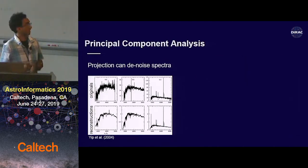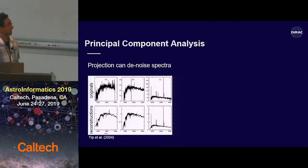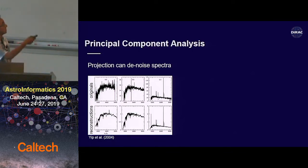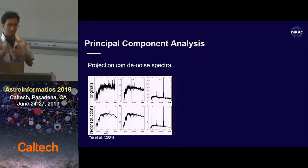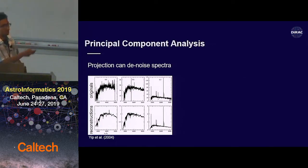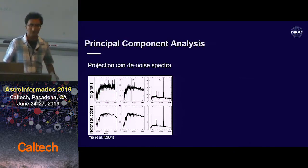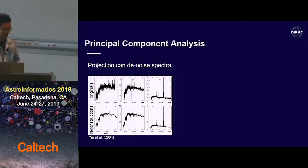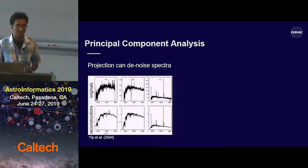PCA can also be useful to denoise your data, because the PCA components are determined using the entire data set you feed in. If you take some of your original noisy data and project it onto the first 10 PCA components, you get reconstructed spectra that look very physically plausible, with a lot of the noise projected out.